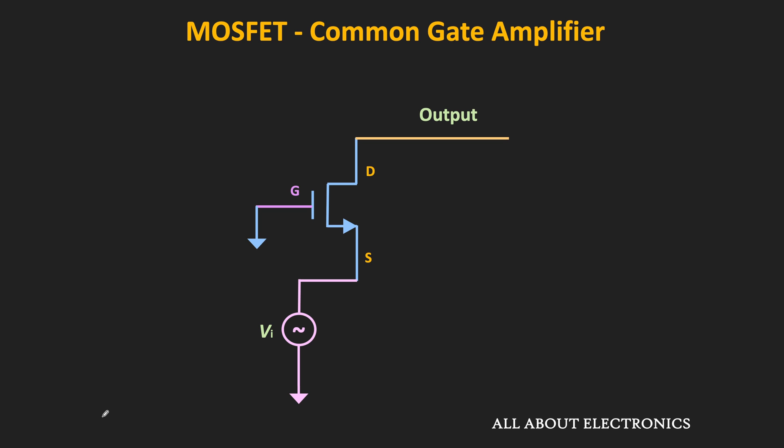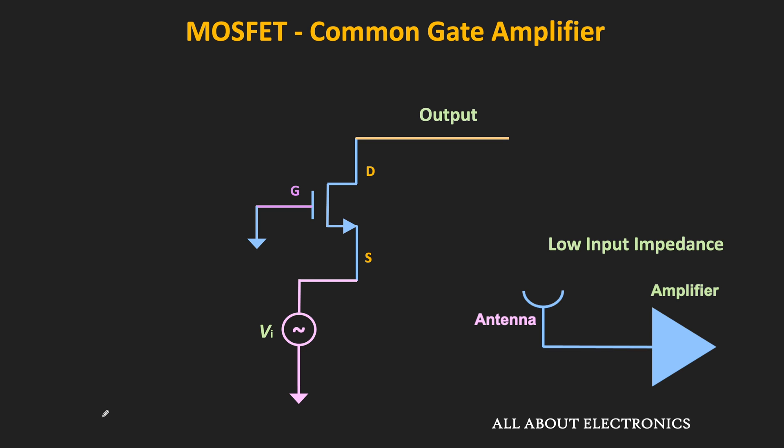Unlike other MOSFET amplifier configurations, the input impedance of this configuration is low. Normally, we say the input impedance of an amplifier should be as high as possible, so that the maximum applied input signal appears across the amplifier input. But in some high-frequency applications, this common gate amplifier is very useful. In such applications, the output of an antenna or transmission line is given to the amplifier for amplification. The input impedance of the amplifier should match the characteristic impedance of the antenna, which is typically in the ohms range — making the common gate amplifier suitable for impedance matching.